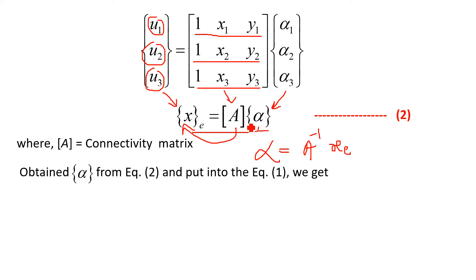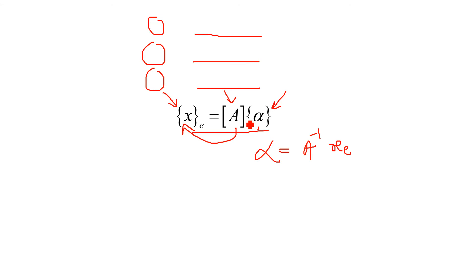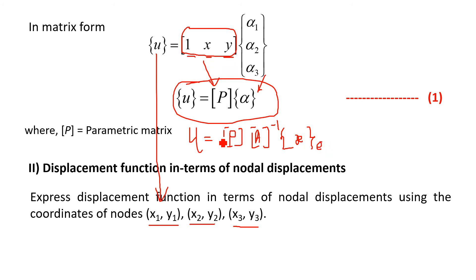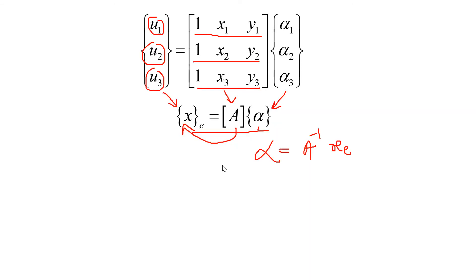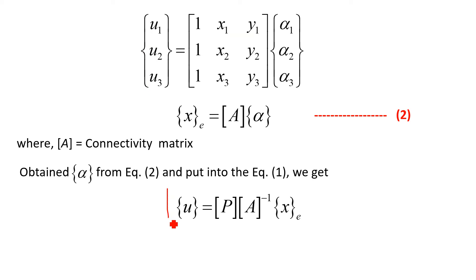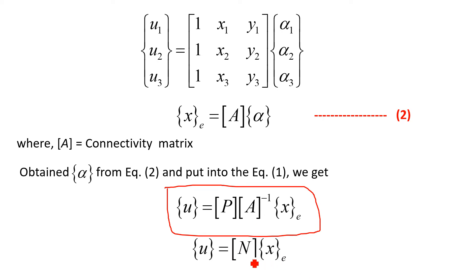Taking A to the left-hand side gives its inverse, so alpha equals A-inverse times XE. Substituting this alpha value into equation number 1 gives U equal to P times A-inverse times XE. Here, P times A-inverse is called the shape function matrix, represented by N. So we need to find out this shape function N.